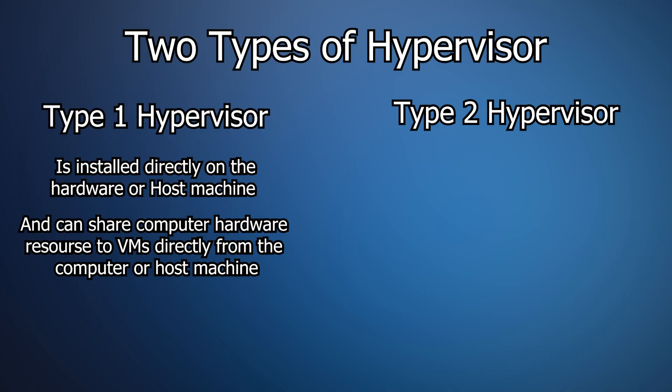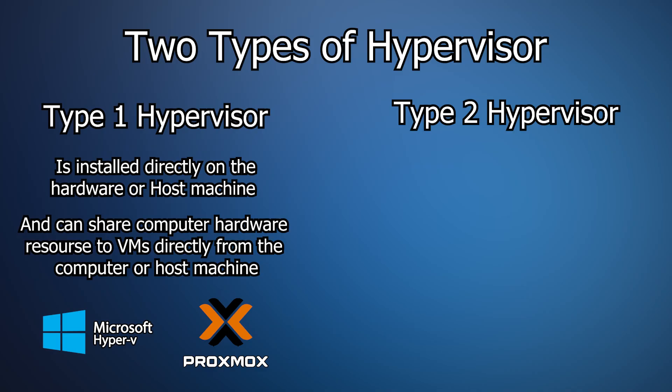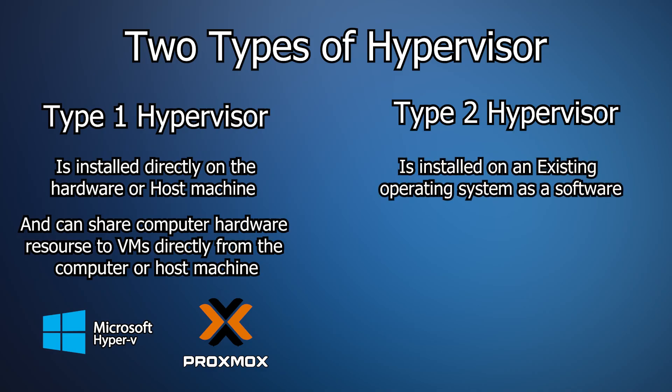There are a number of type 1 hypervisors, but for our tutorials, I'm only going to mention two — Hyper-V and Proxmox — because those are the two I will be using throughout my tutorials. A type 2 hypervisor is installed on an operating system as a software.